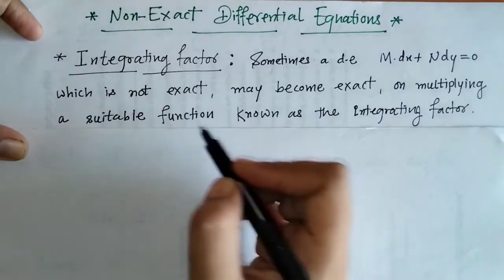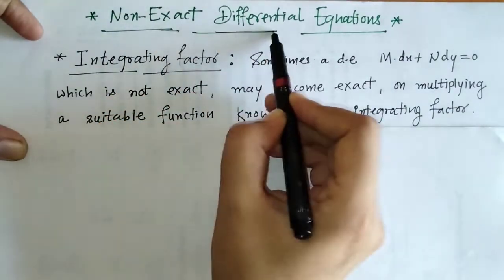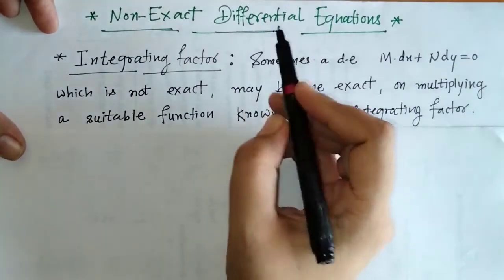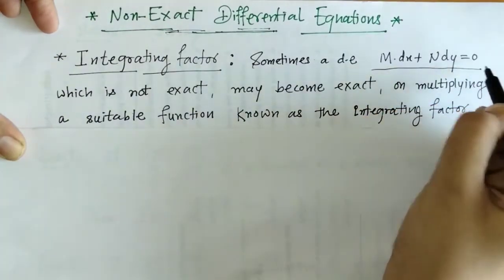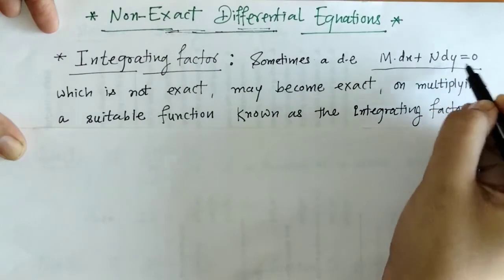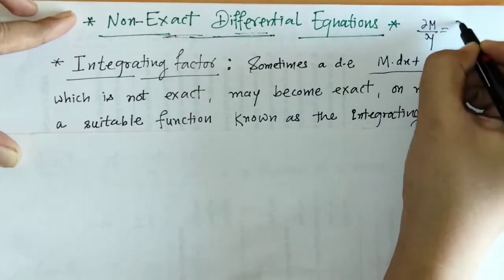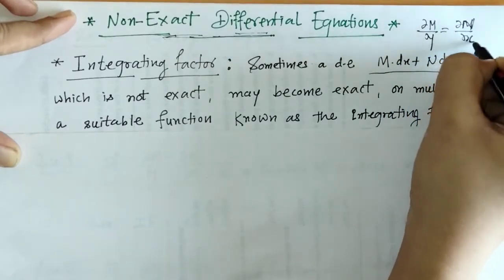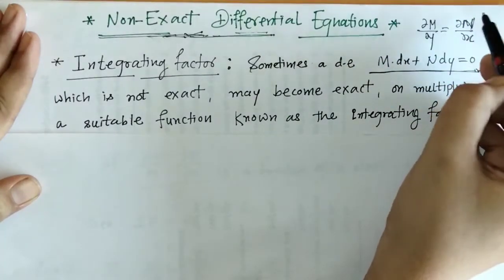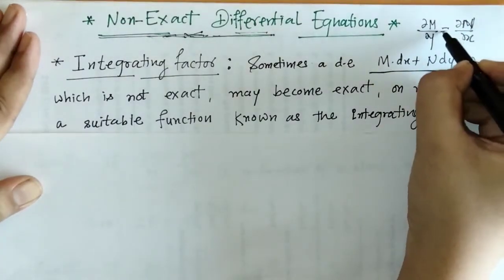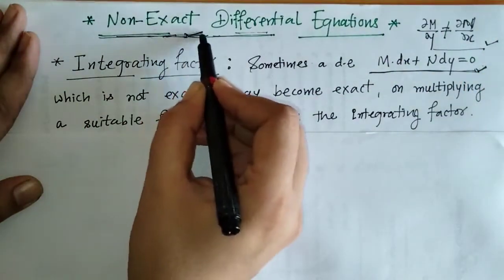Hello everyone, welcome to Unlock Maths. Today we are going to discuss non-exact differential equations. In the previous lecture we discussed exact differential equations. We know that a differential equation of this form is said to be exact when it satisfies the condition del M del y is equal to del N del x. When this condition is not satisfied, that means del M del y is not equal to del N del x, then that equation is said to be a non-exact differential equation.